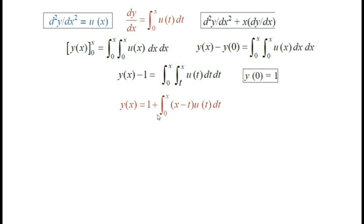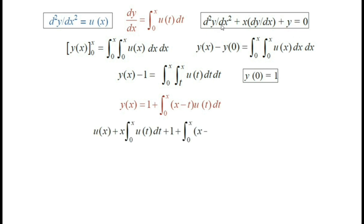Now putting the values of d²y/dx² = u(x), dy/dx = integral from 0 to x of u(t) dt, and y(x) = 1 plus integral from 0 to x of (x minus t) u(t) dt back into the original equation, we get: u(x) + x times [integral from 0 to x of u(t) dt] + [1 + integral from 0 to x of (x minus t) u(t) dt] = 0.